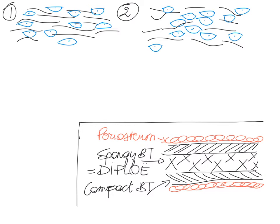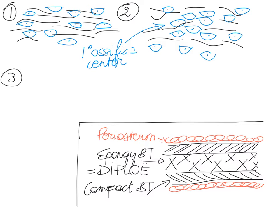The clustering of these mesenchyme cells indicates that we have begun to form a primary ossification center. Once we have these mesenchyme cells clustering, they slowly but surely start to differentiate. And they are going to differentiate into osteoblasts, which tend to look more cuboidal.